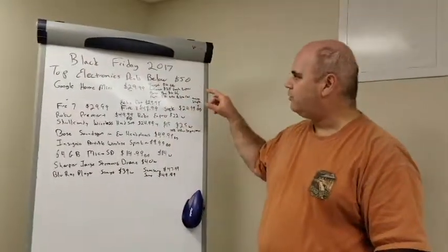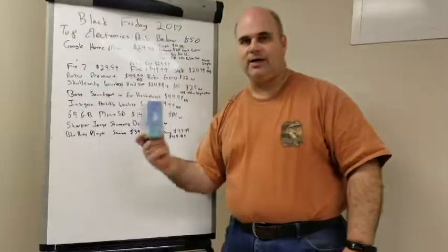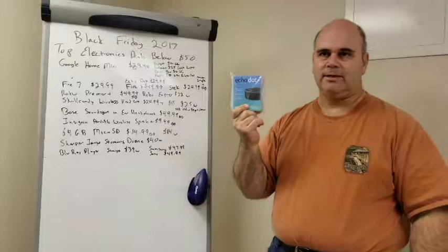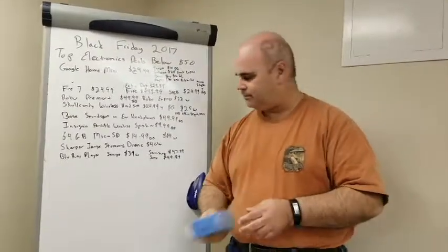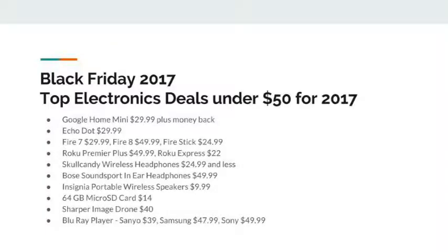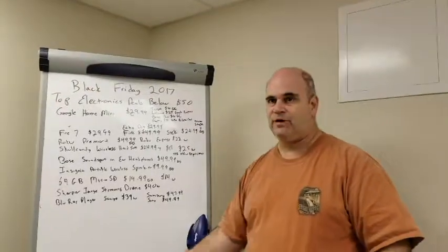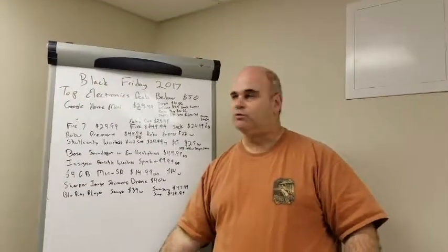Now similar to the Google Home Mini is the Echo Dot. So this is like a big echo, but smaller. Also a voice assistant. And you'll see this all over the place for $29.99. Some of the same outlets, some other outlets, all over the place for $29.99. I would not spend more than that on Black Friday because you'll find this all over for $29.99.